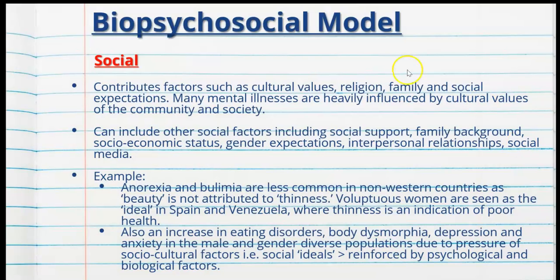Then we have social factors, which contribute elements such as cultural values, religion, family and social expectations. Many mental illnesses are heavily influenced by cultural values or the community and society. For example, anorexia and bulimia are less common in non-Western countries because beauty is not attributed to thinness as it is in the Western world — in Spain and Venezuela, voluptuous women are considered the ideal, and thinness is seen as poor health.